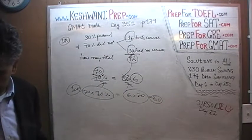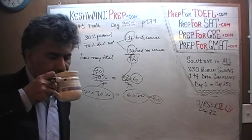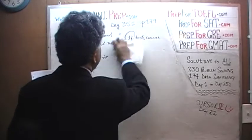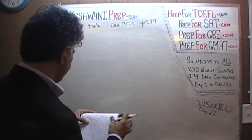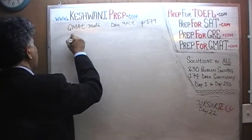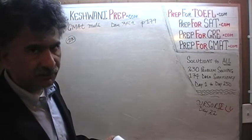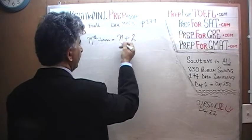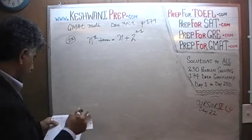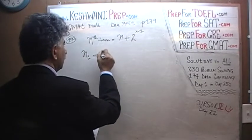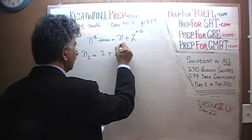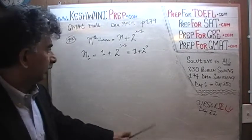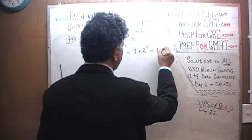Next one, number 190. In problem 190, we are told that the nth term in a series is to be found by using this formula: nth term equals n plus 2 raised to the power of n minus 1. For example, the very first term in the series is simply going to be 1 plus 2 raised to 1 minus 1, which is 1 plus 2 raised to 0. Any number raised to 0 is just 1, so we end up with 1 plus 1, which is 2.